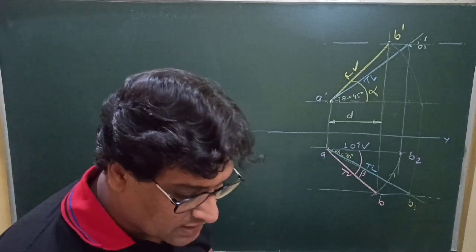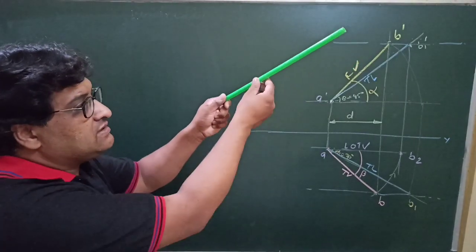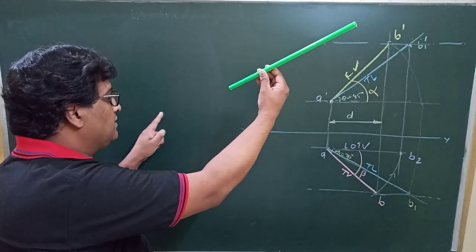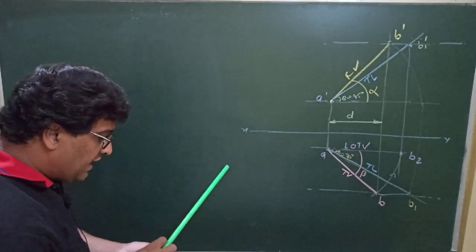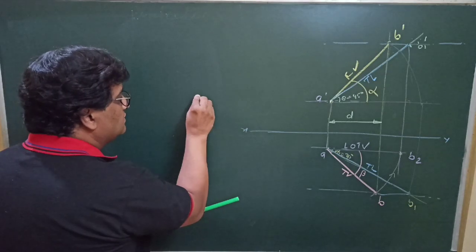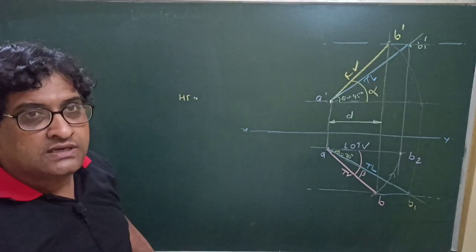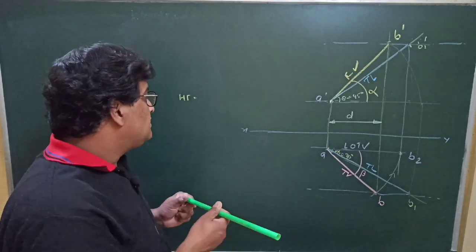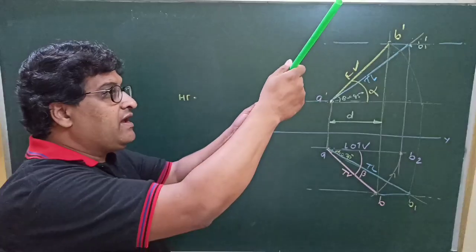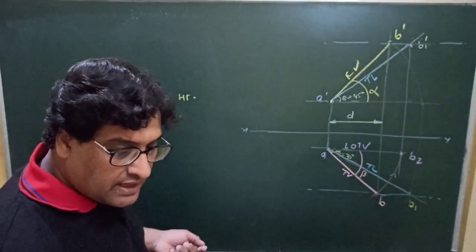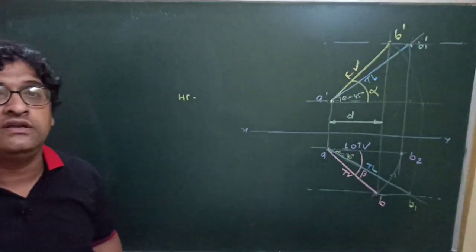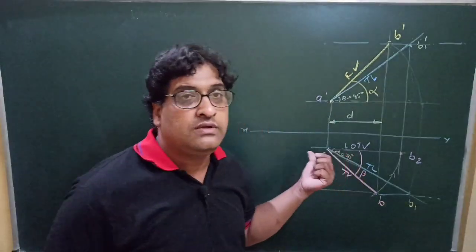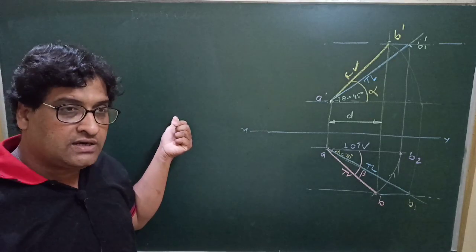Now what is horizontal trace and vertical trace? First understand this. Say this is the straight line for which we have drawn these projections. If I extend this straight line up to the vertical plane, the point at which it strikes the vertical plane — this point — will be the horizontal trace. We can say it is the point of intersection of the straight line, if required extended, with the vertical plane. If I extend this line further, it will also strike the horizontal plane somewhere, and that point will be the horizontal trace. So basically it is a point, and we have to draw the projections of these two points: one is the vertical trace and the second is the horizontal trace.